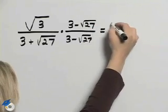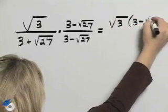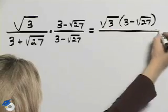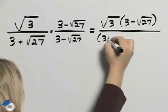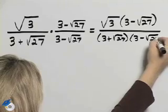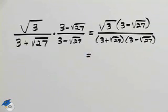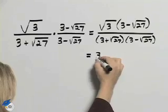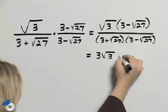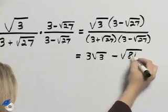Doing this multiplication will give us the square root of 3 times 3 minus the square root of 27 all over 3 plus the square root of 27 times 3 minus the square root of 27. Now multiplying using the distributive property will give us 3 times the square root of 3 minus the square root of 3 times the square root of 27 is square root of 81.